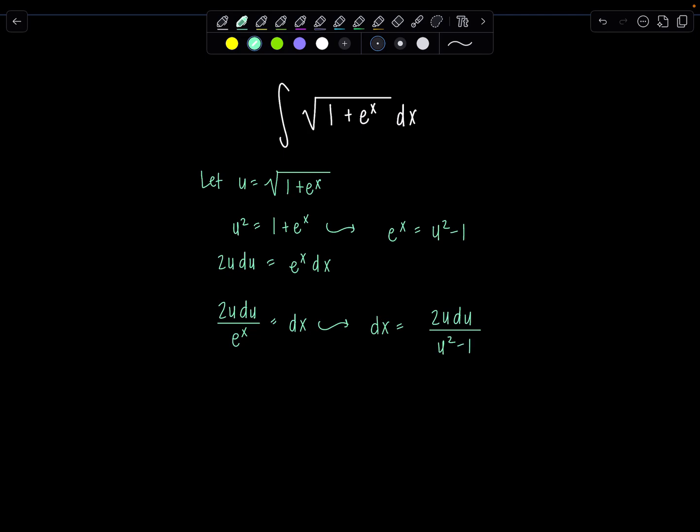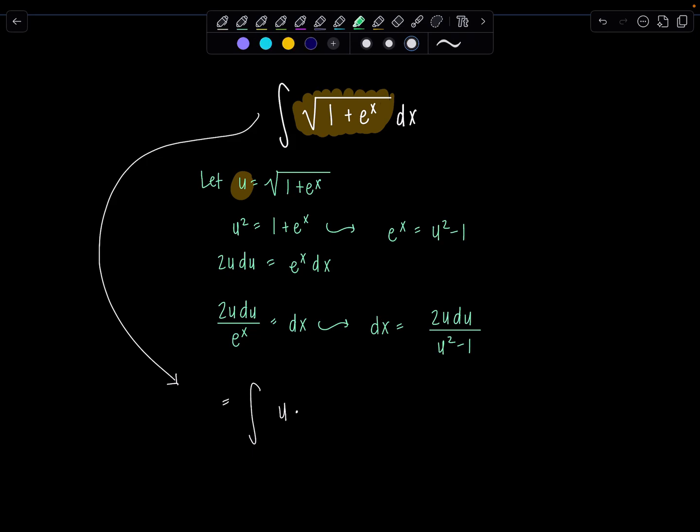So then this means dx is equal to 2u du over u squared minus 1. Good. Looks like we're in business. We can make this u sub in one fell swoop. Okay, so instead of all of this, square root 1 plus e to the x, that's now just u. So we've got u times, and then dx is all of this, 2u du over u squared minus 1. Perfect.